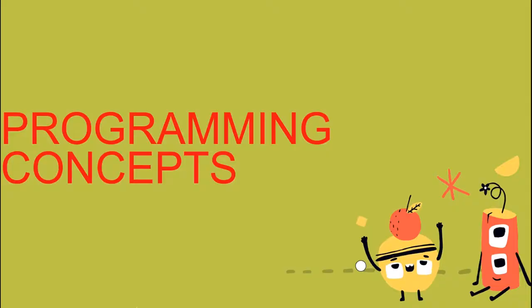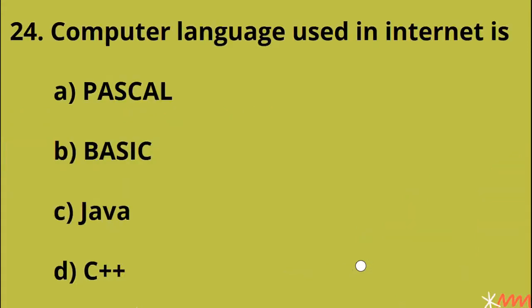First, we have a few questions about programming concepts. So, let's go to our first question. Computer language used in the internet is: Pascal, Basic, Java, or C++. Option C — Java.